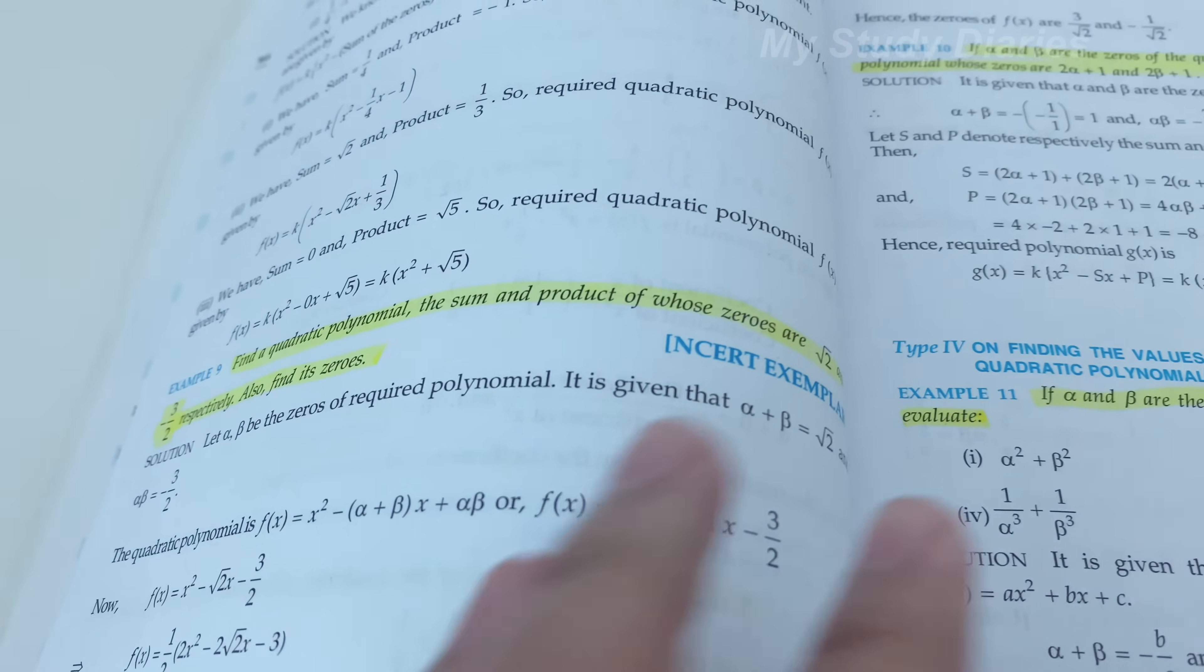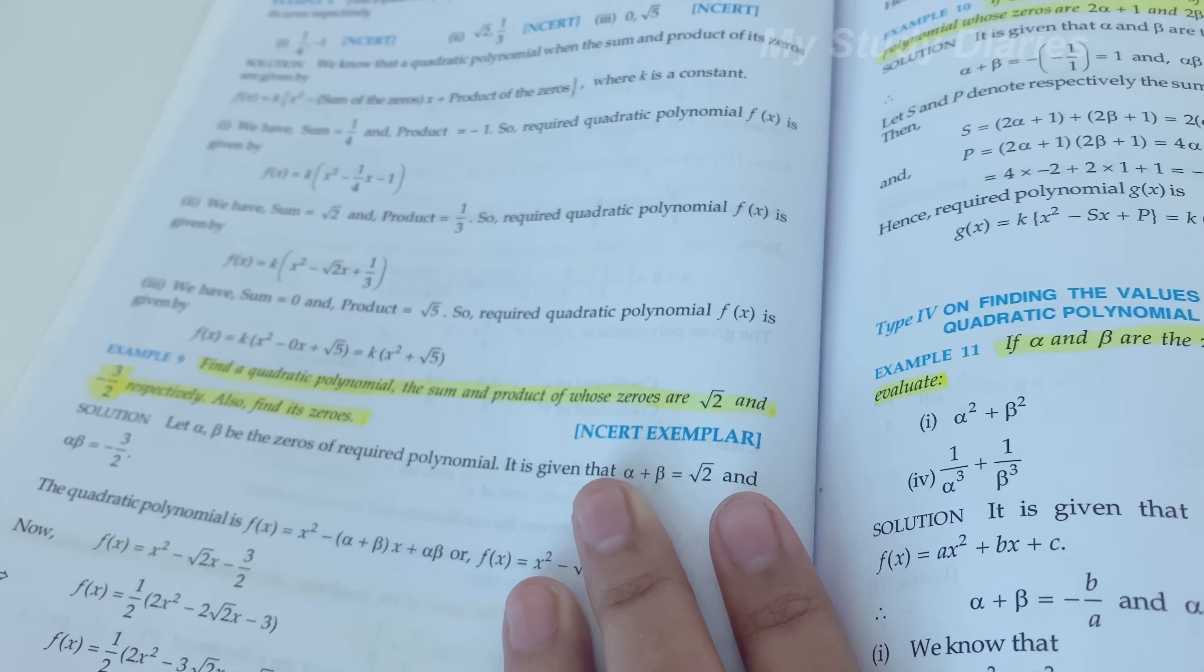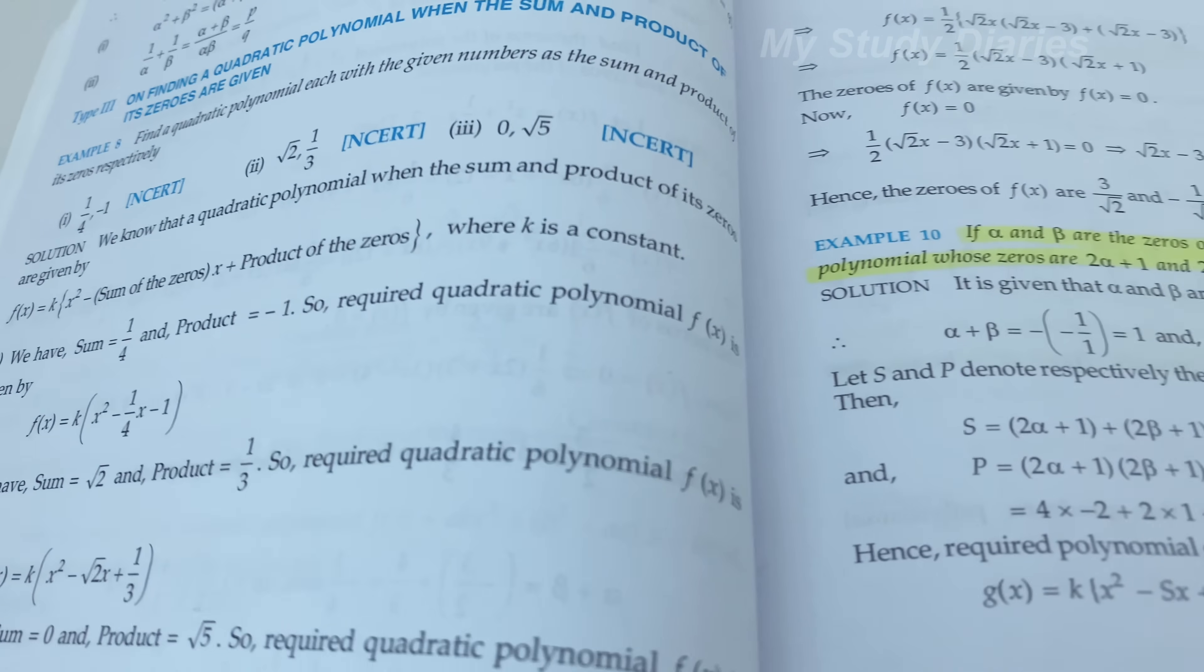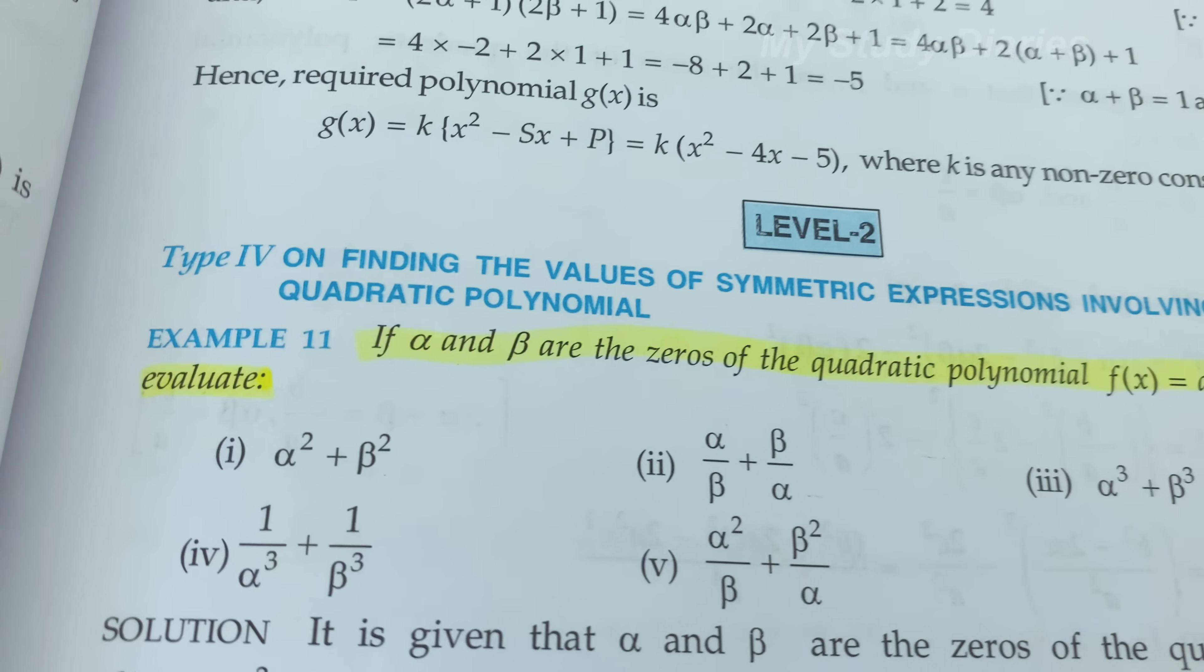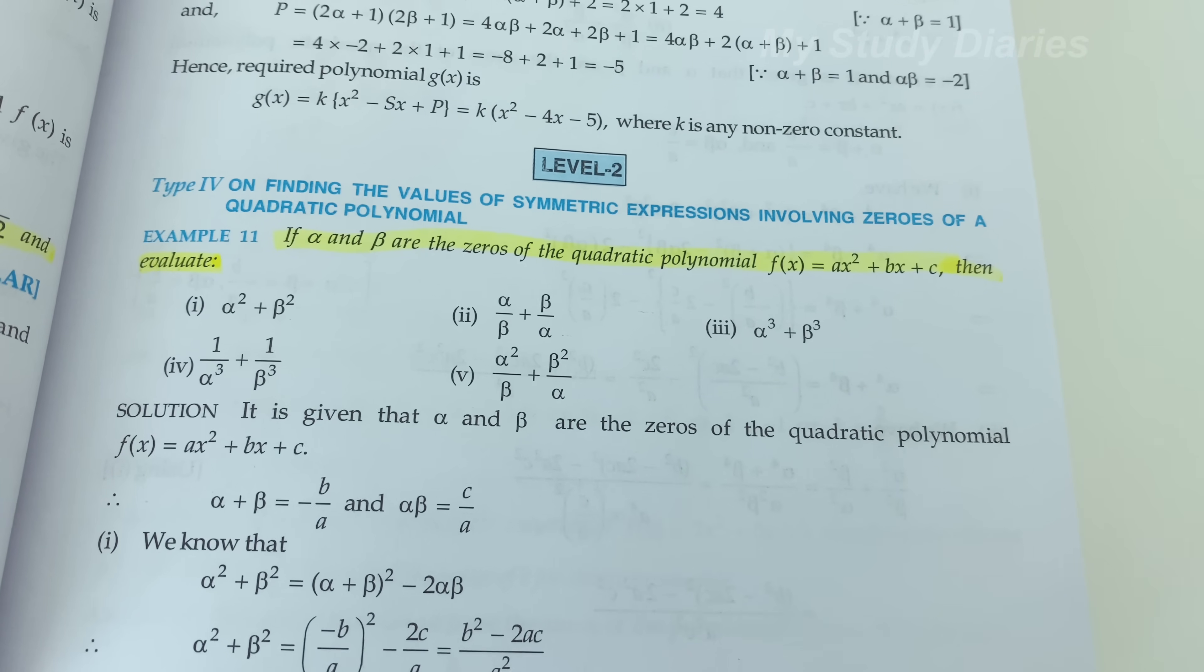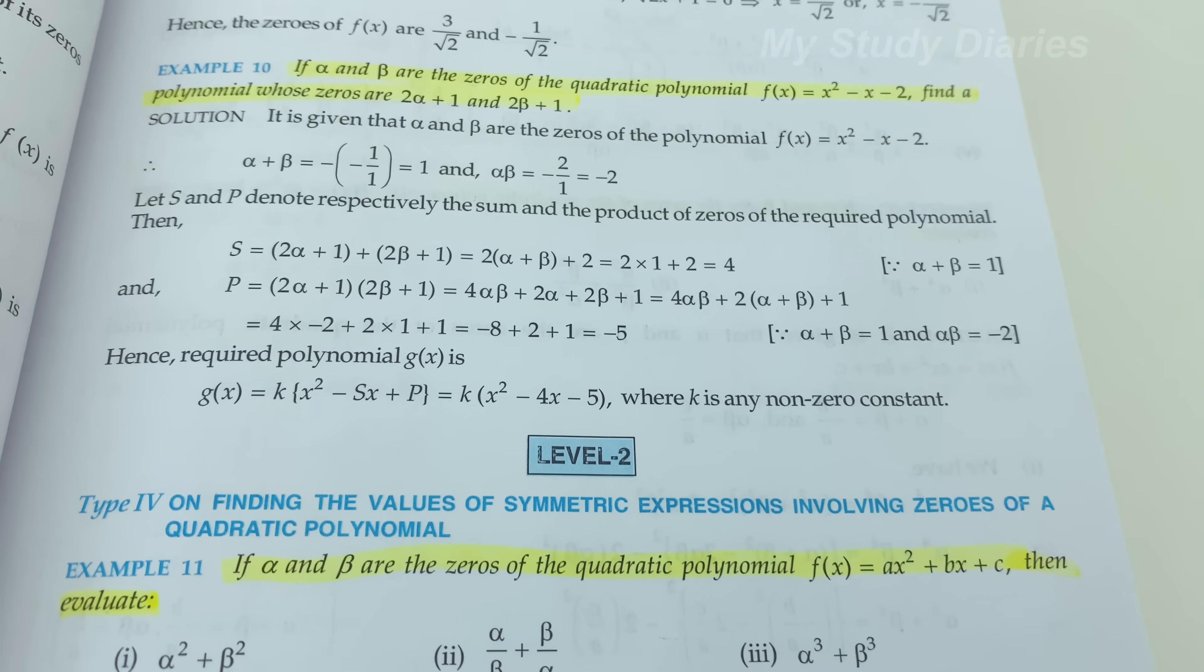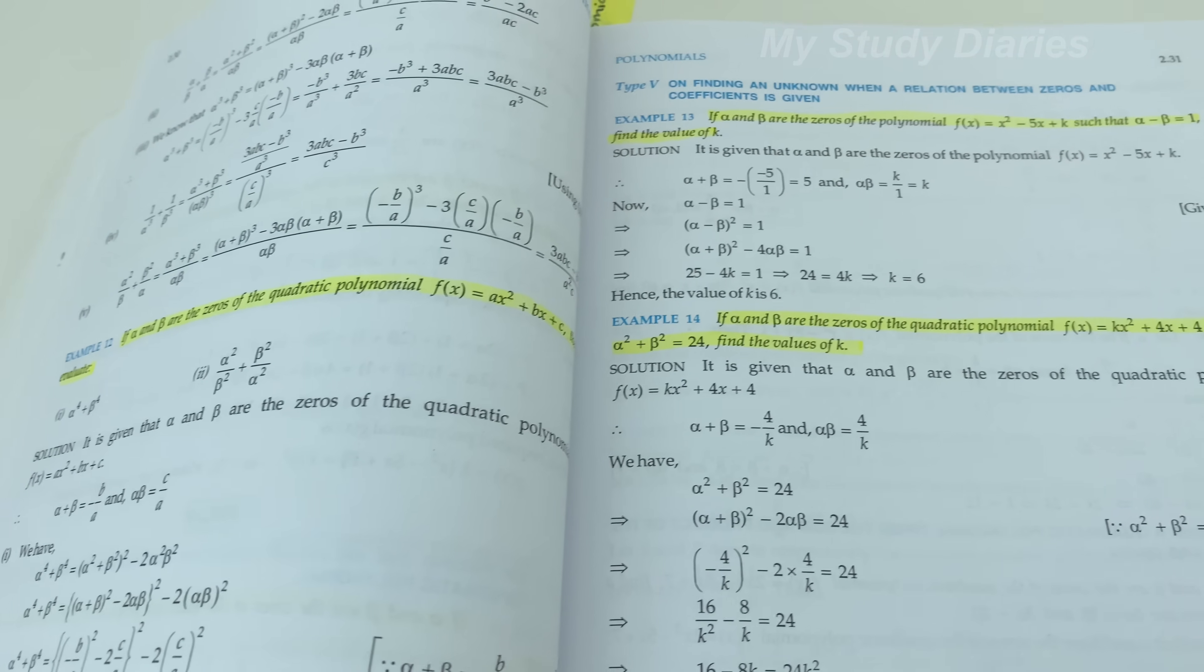Now this question here is from NCERT exemplar. And again, if you've done the exemplar, you don't need to do it. But I think I did not do that at that moment. And that's why I've highlighted it. All the highlighted questions are the ones I felt was not very much in the textbook. These types of questions where the alpha beta values were of different types, like it is in the numerator, denominator, addition, subtraction. It's just very versatile, which I liked.